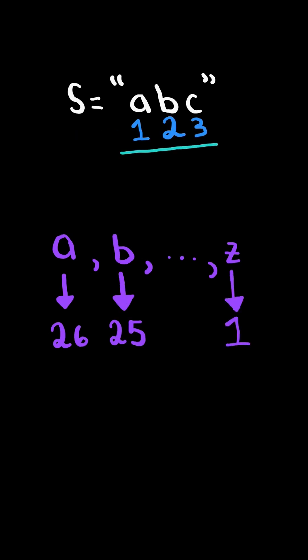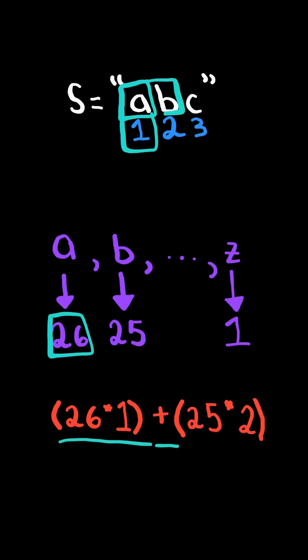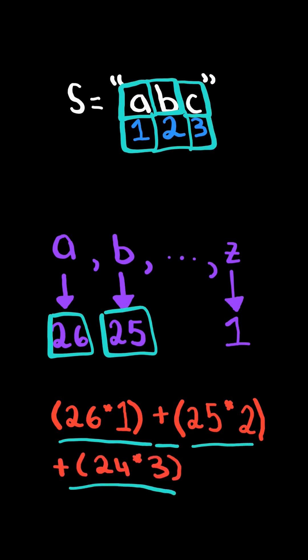Now consider the 1-based indices of the string. Take the mapping of the character and multiply it by its index. Add this result to the next character multiplied by its index and continue the process and finally return the result.